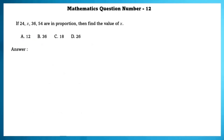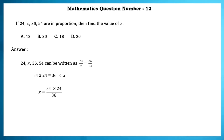Mathematics question number 12. If 24/X, 36, and 54 are in proportion, find the value of X. We write 24/X = 36/54, and solving this equation, we find the value of X = 36.